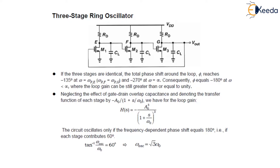Now, neglecting the effect of gate-drain overlap capacitance, let us denote the transfer function of each stage by minus a₀ upon (1 + s/ω₀). We are using 3 stages and they are in product. So the gain of the first stage is minus a₀ upon (1 + s/ω₀), and the gain of the second and third stages is also the same. Thus the loop gain equals minus a₀ cubed upon (1 + s/ω₀) cubed.